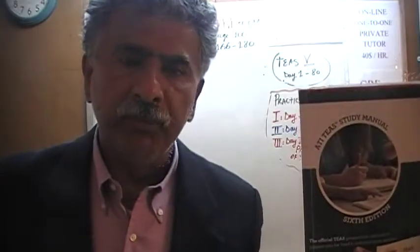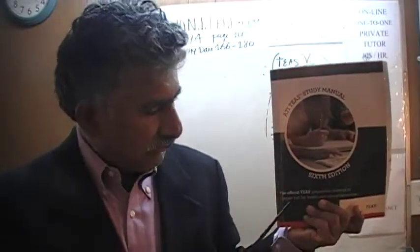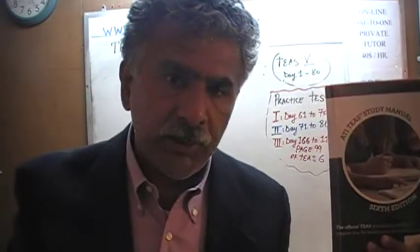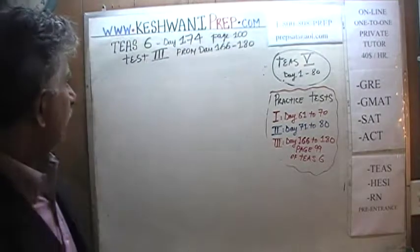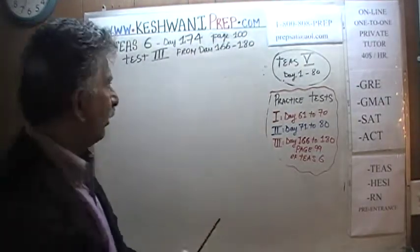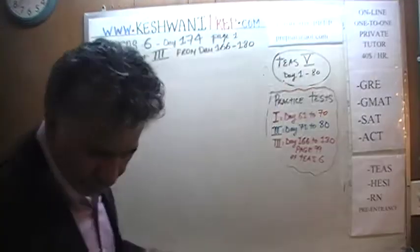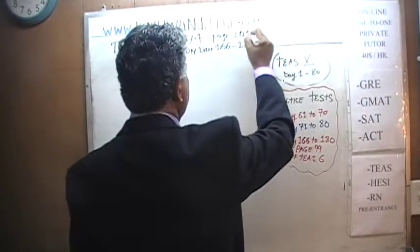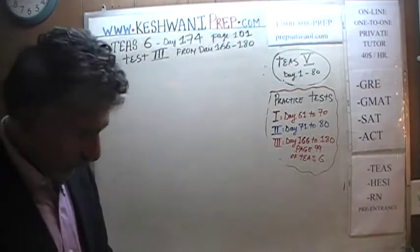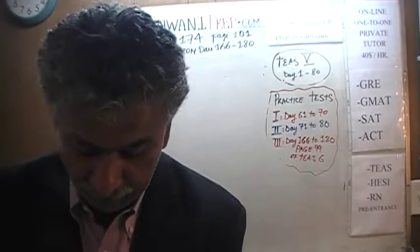We are here because we want to prepare for the TEAS. We have been solving math problems out of this book — the ATI TEAS study manual, the 6th edition. If you do not own this book already, purchase it immediately if you are going to need it. Today is our lesson number 174 and we are on page number 101. Turn to it please. We are in the process of solving problems from the exam, which we are referring to as test number 3.